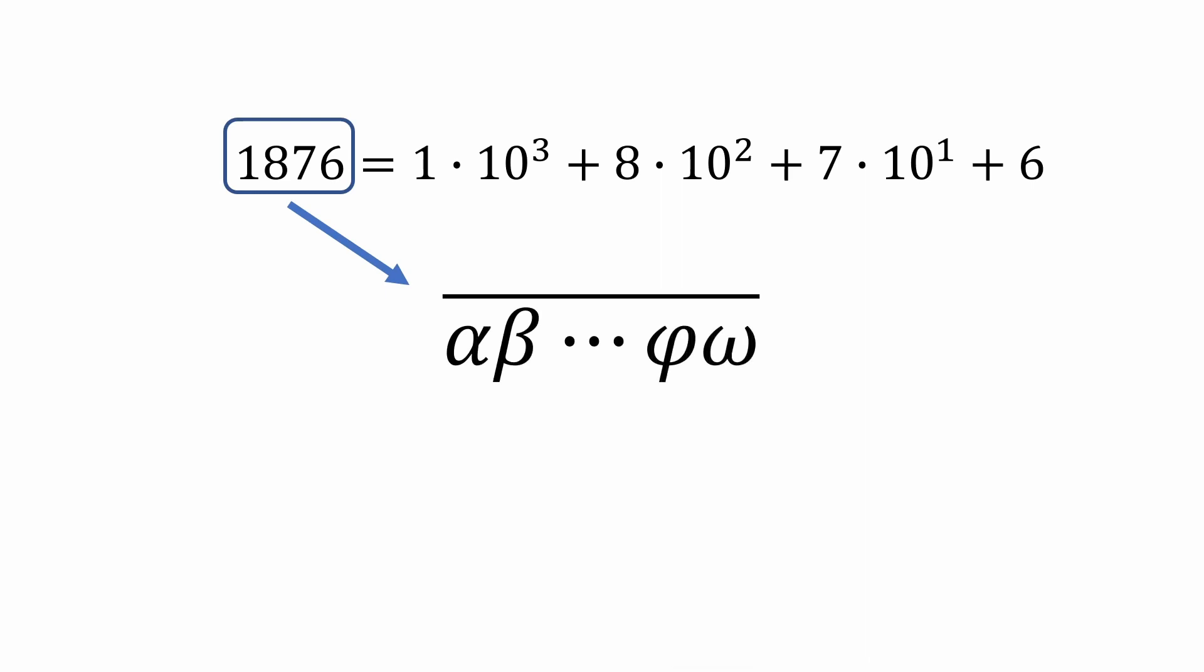Let's start by rewriting the number we just used, 1876, as powers of 10. We would have 1 times 10 cubed plus 8 times 10 squared plus 7 times 10 plus 6. Now let's extend that to a general number whose digits are represented by first digit alpha, second digit beta, and so on all the way to the second to last digit phi, and last digit omega. I put the bar on top to remind us that this is a string of digits, not a product of digits.